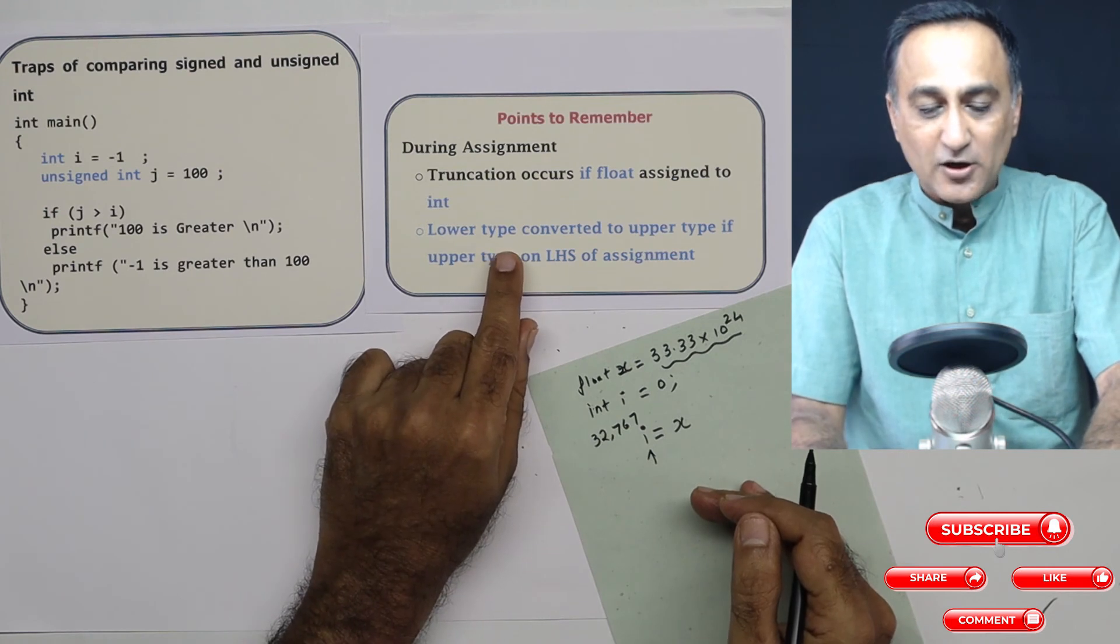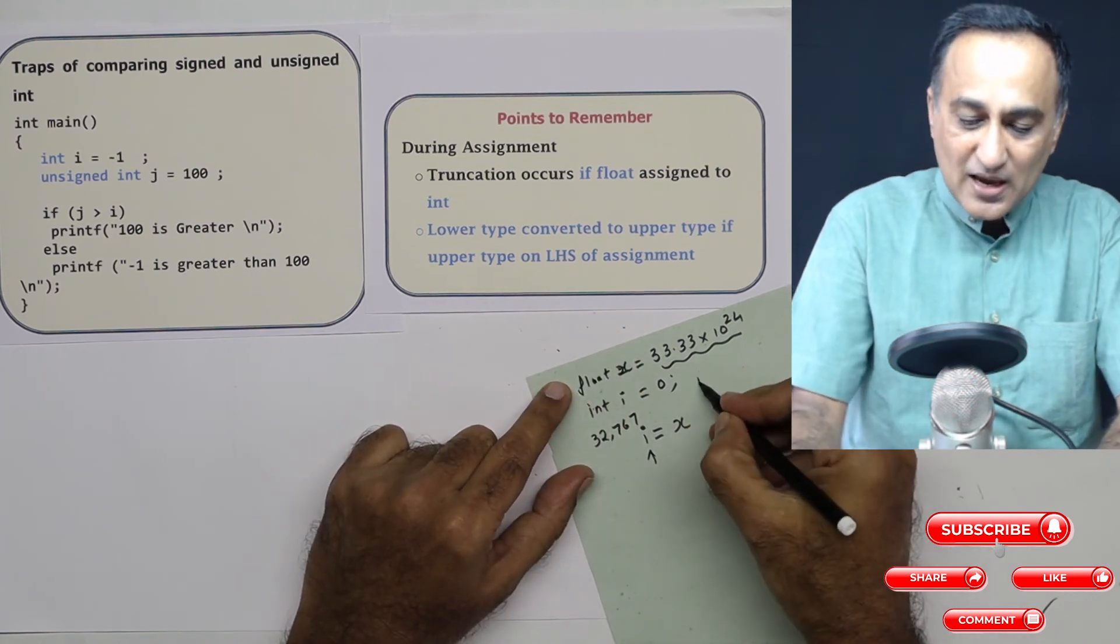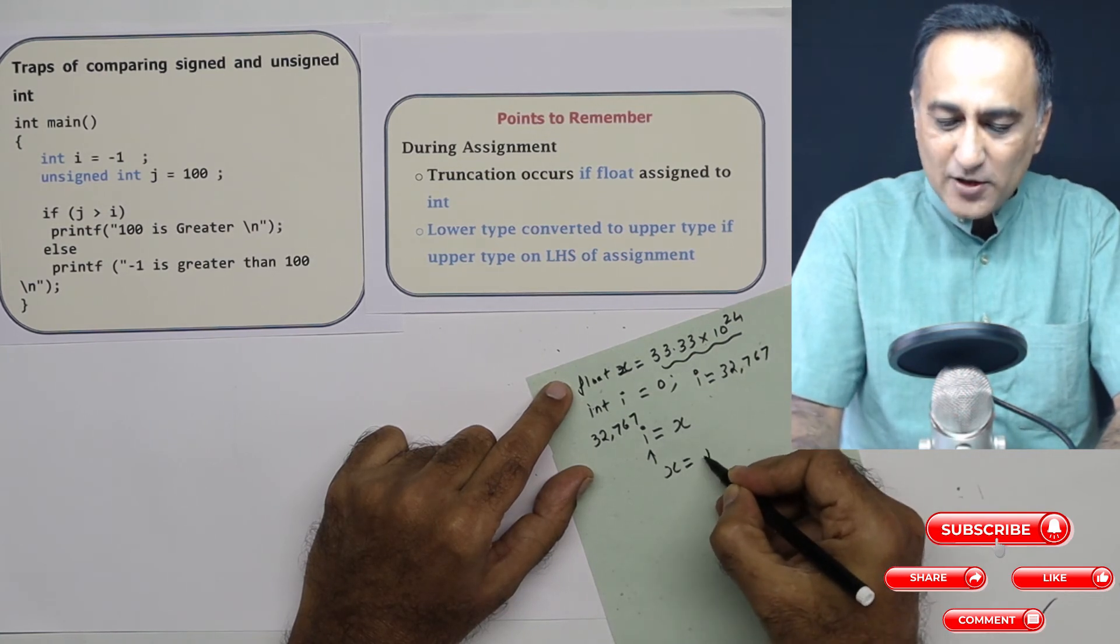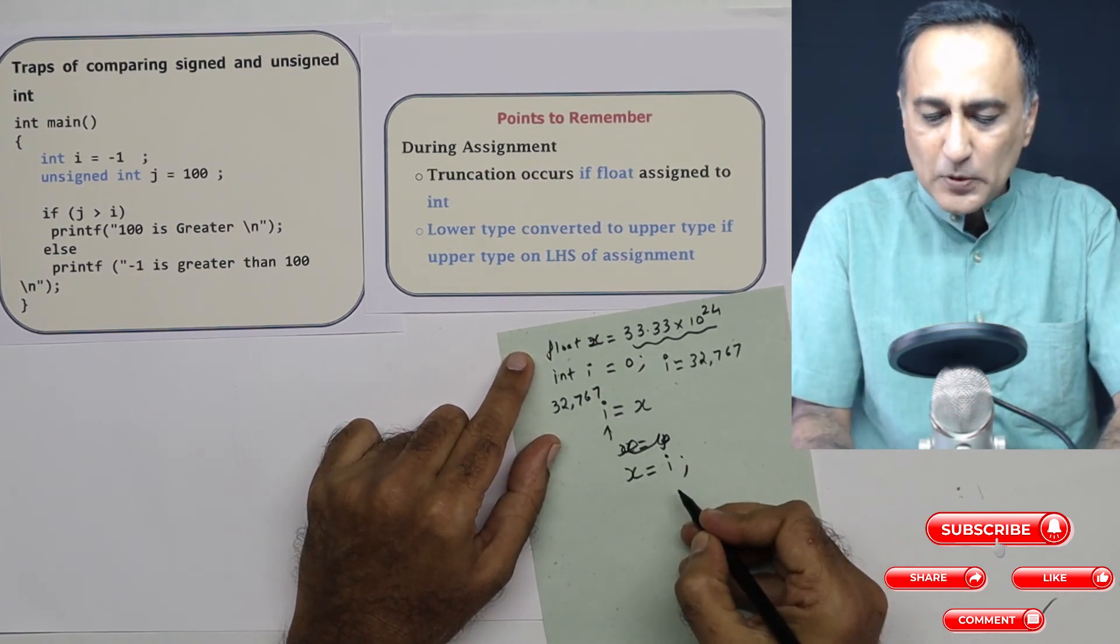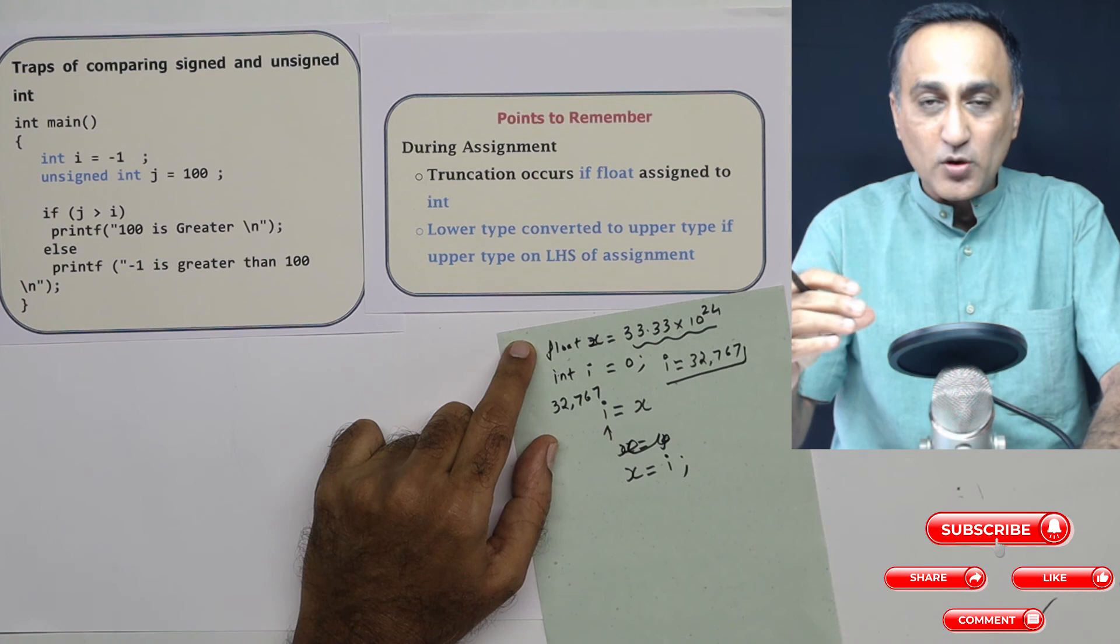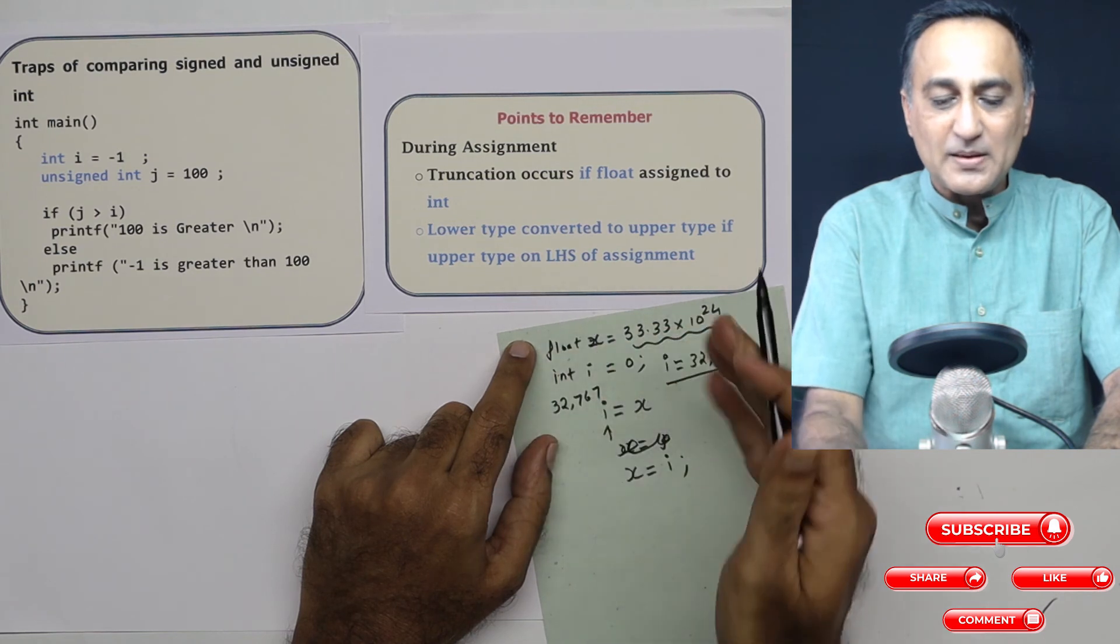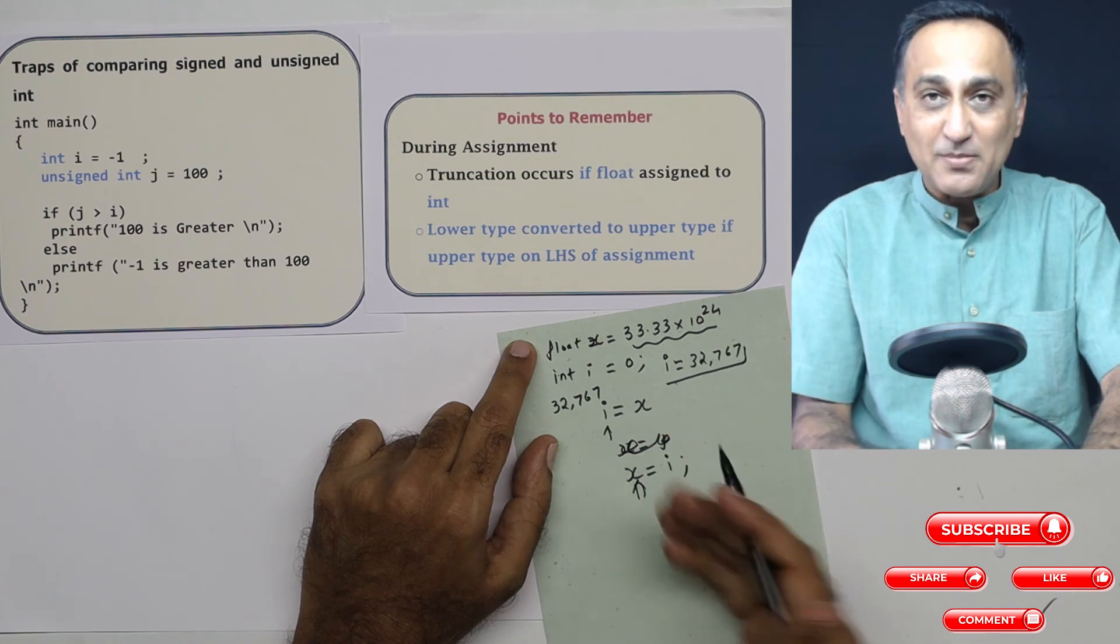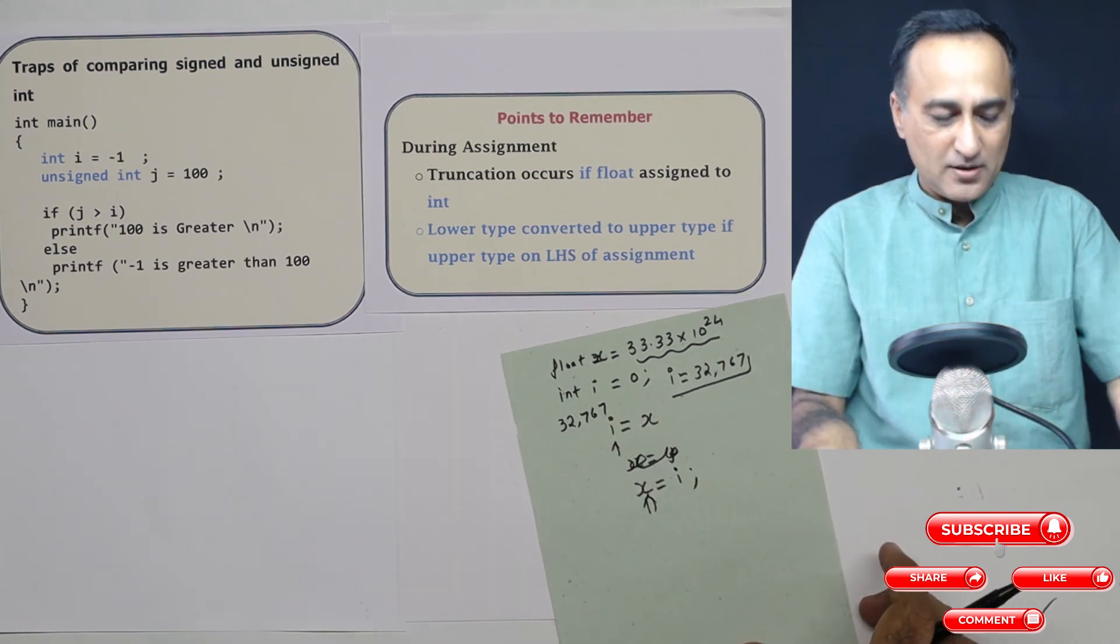So the moral of the story is lower type can be converted to upper type if upper type is on the LHS of the assignment. Suppose i was 32,767, I could easily say x is assigned the value of i. This is not a problem because x as a floating point number has more capacity than i, which is an integer which has a lower capacity. So lower data type is converted to the upper data type if the upper data type is on the left hand side of the assignment.